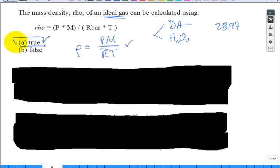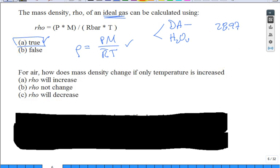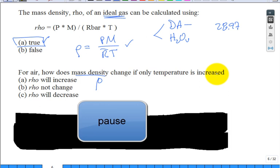A lot of times we use density as well as specific volume. Let's go to a clicker question. For air, how does the mass density rho change if only the temperature is increased? Leave pressure alone, leave the composition of the gas alone. How does density change if temperature goes up?